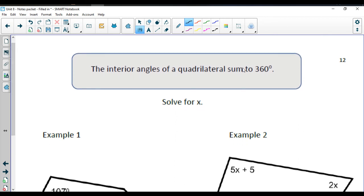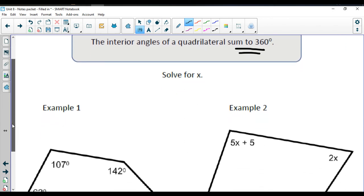Interior angles of a quadrilateral are going to sum to 360 degrees. So we saw with a triangle that we added up to 180, and with a quadrilateral we get to 360.